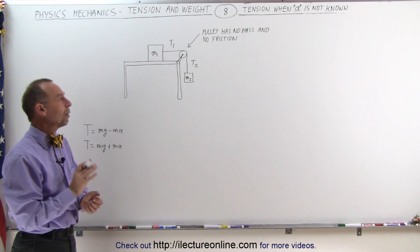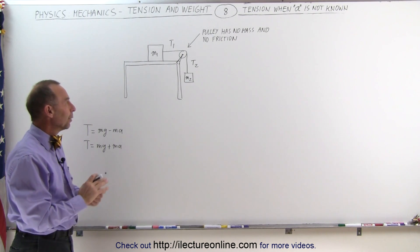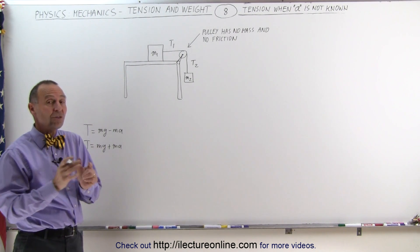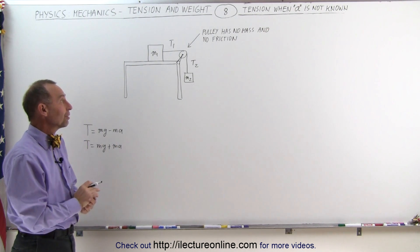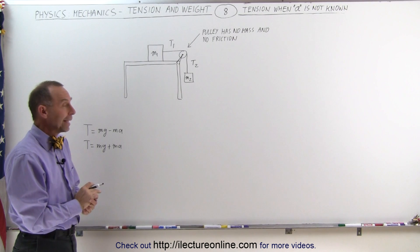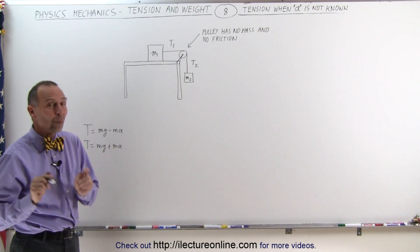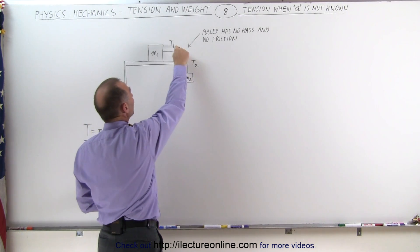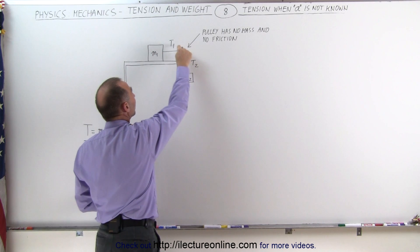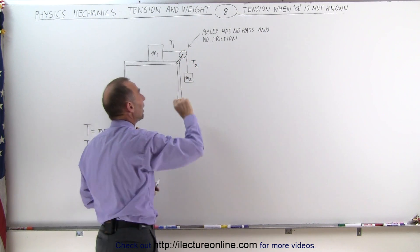Well, this is what we do. Whenever the acceleration is not known, you must find the acceleration first. Secondly, once the acceleration is known, then you can find out what the tension is on both sides of the string.